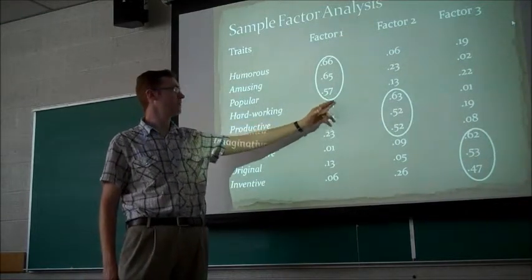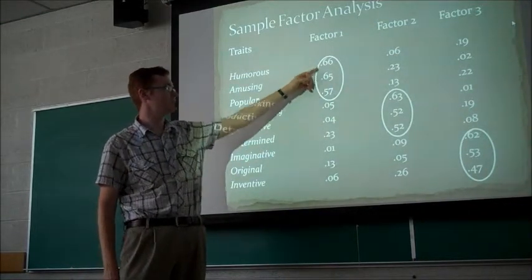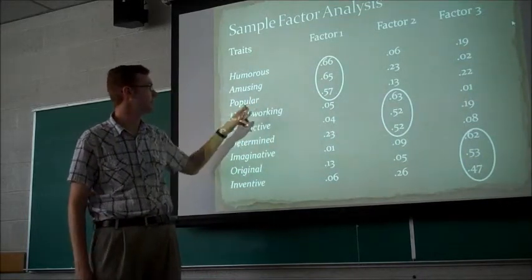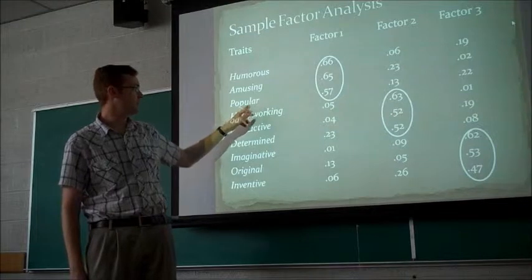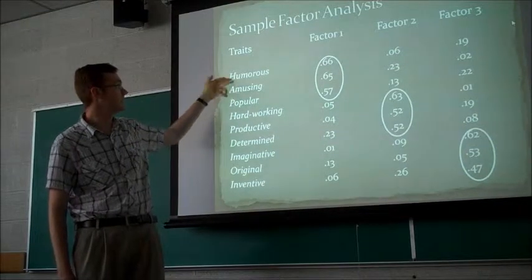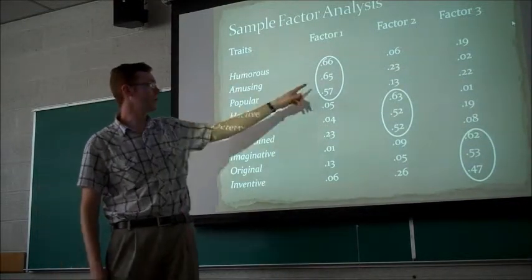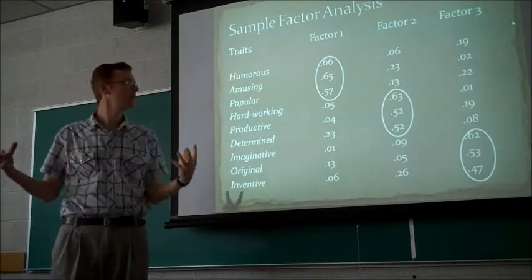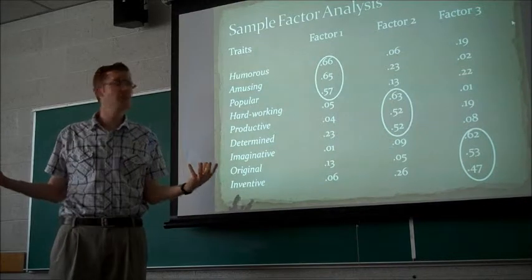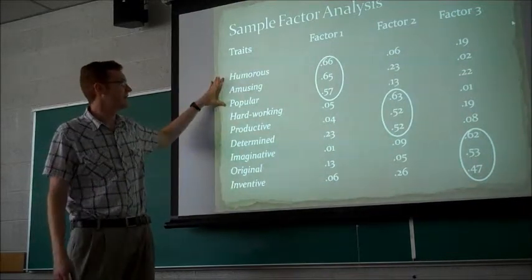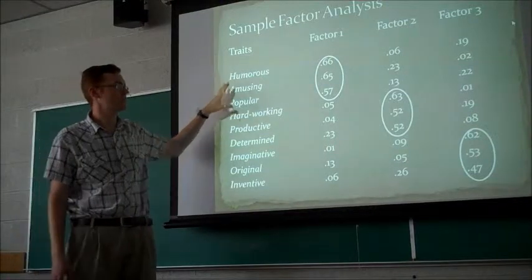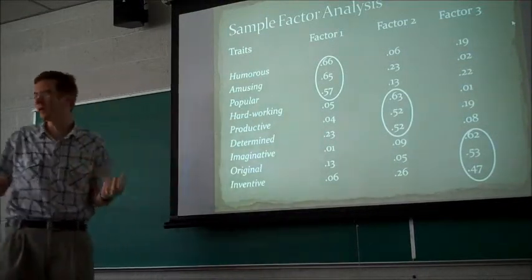And these are essentially very similar to correlation coefficients between these things. It's just that these three traits correlate to this degree with whatever this factor is. So there's some factor that goes unnamed here that correlates with all these three things. And so the researcher has to figure out, well what exactly is that? What do we call that factor?